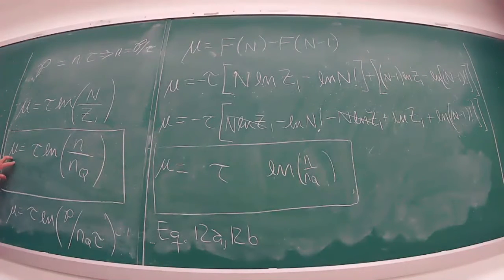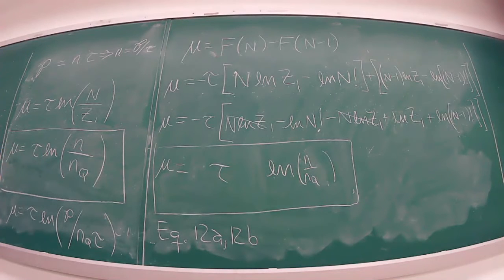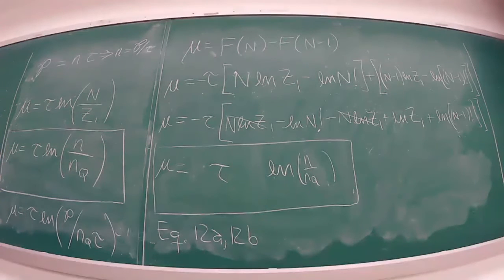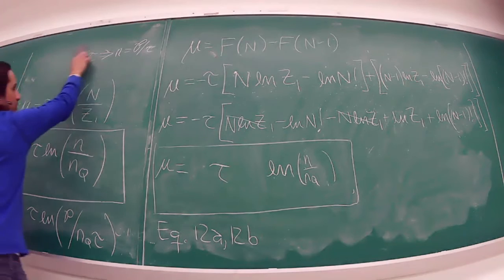What are the units of chemical potential? We can see from the equation — it's Joules. The chemical potential is in units of energy.